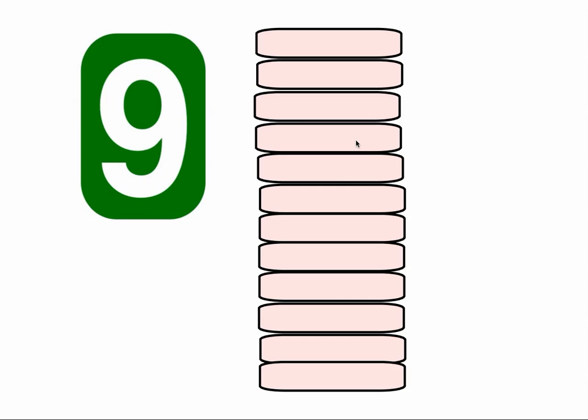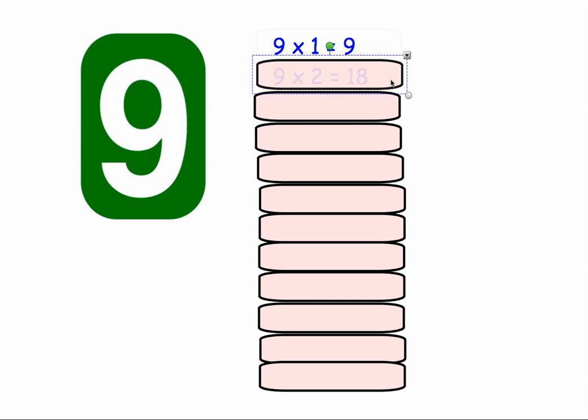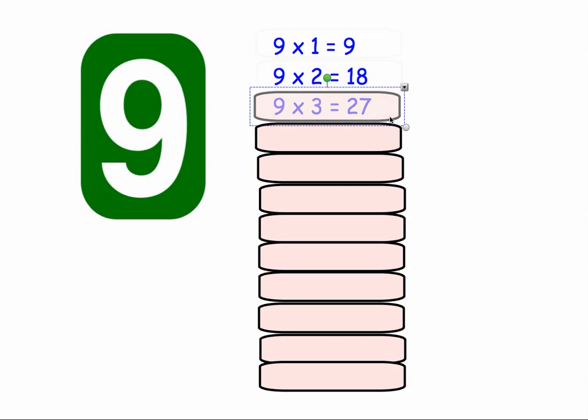In this video we're going to look at the 9 times tables. 9 times 1 equals 9. 9 times 2 equals 18. 9 times 3 equals 27.